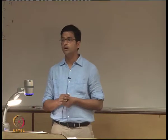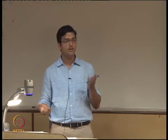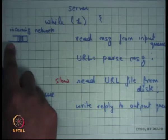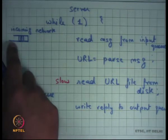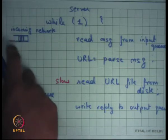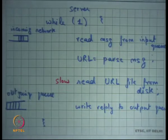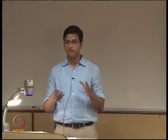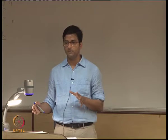With this single-threaded code, you can only service up to 100 requests per second. If requests arrive faster than that, the incoming queue fills up and packets get dropped. 100 requests per second is not a good number — modern web servers deal with tens of thousands of requests per second.